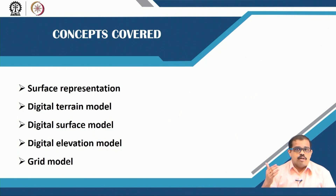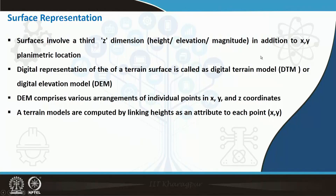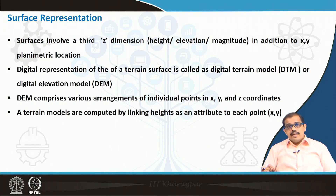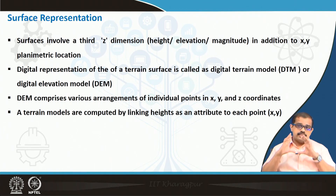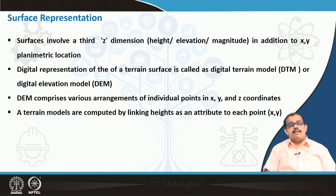Let us go into each of these and understand different ways of representation. The first thing is surface representation. When I say surface, a surface is not represented only by an x and y dimension, because when you have x and y dimensions it is just a planimetric location. A surface should always involve a z dimension, which is actually giving a height, elevation, and magnitude, in addition to the x and y coordinates.